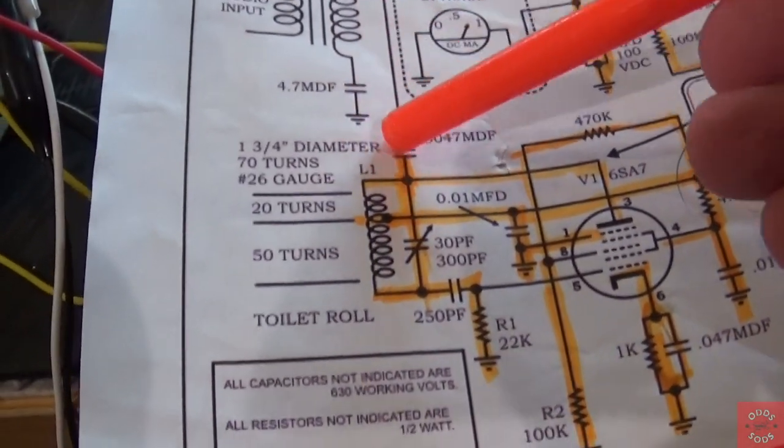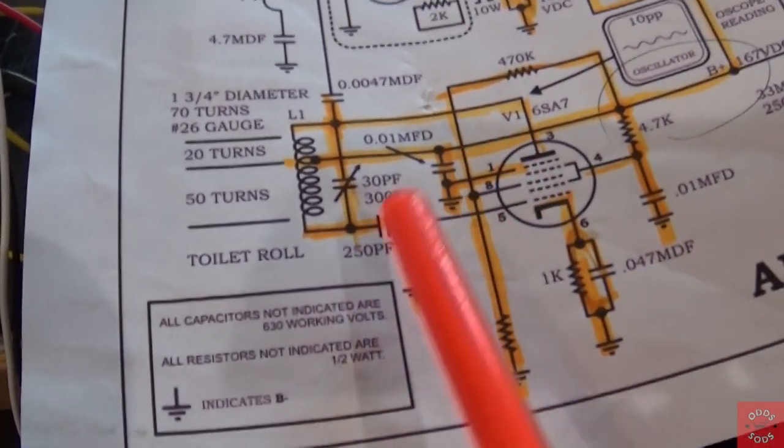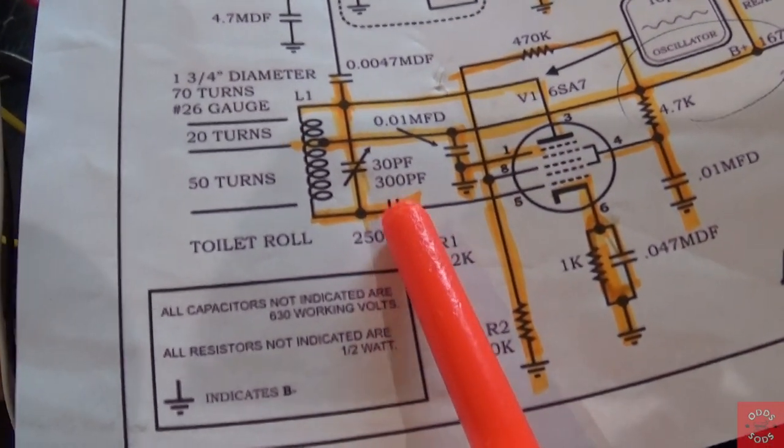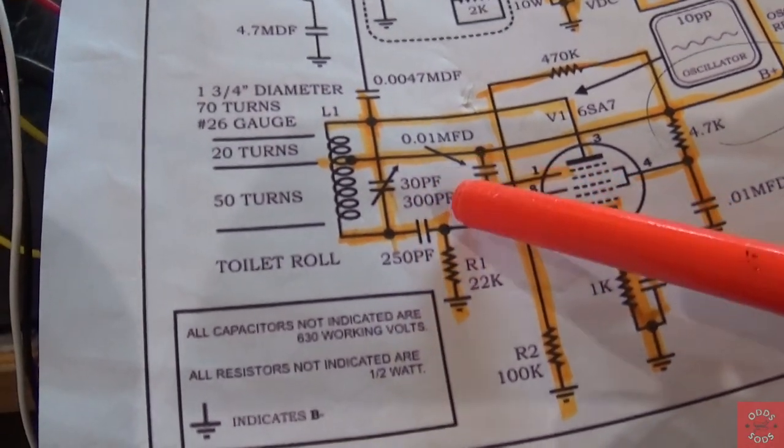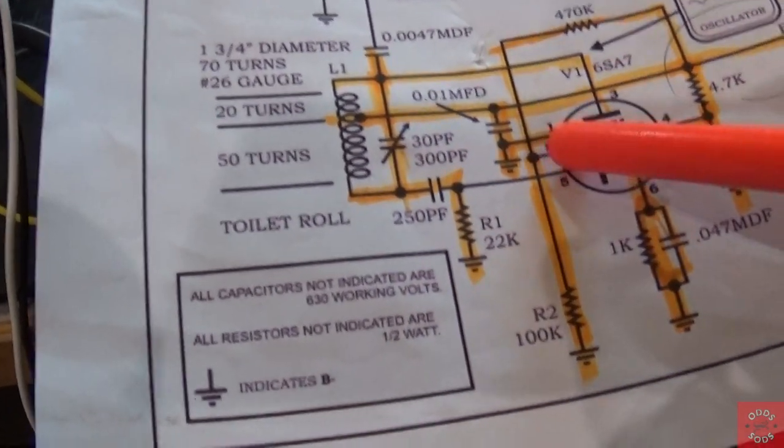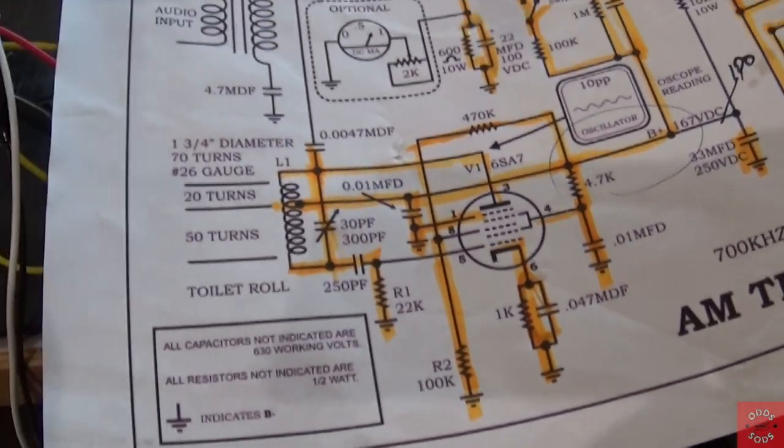So, coming down this rail right here, I am getting about 280 volts up to this capacitor, 250 picofarad. On the other side of this capacitor, I'm getting 0. Nothing. Nothing here. That's my first observation.